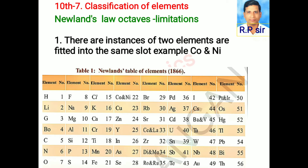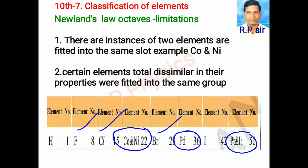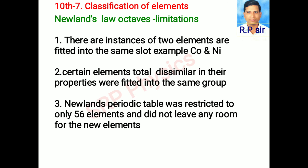Limitations: There are instances where two elements are fitted into the same slot, e.g., cobalt, nickel, palladium, platinum, and iridium. Certain elements totally dissimilar in their properties were fitted into the same group. For example, he arranged cobalt, nickel, palladium, platinum, and iridium — which have different properties compared to halogens — in the same row. Those are fluorine, chlorine, and bromine. Newland's periodic table was restricted to only 56 elements and did not leave any room for new elements.